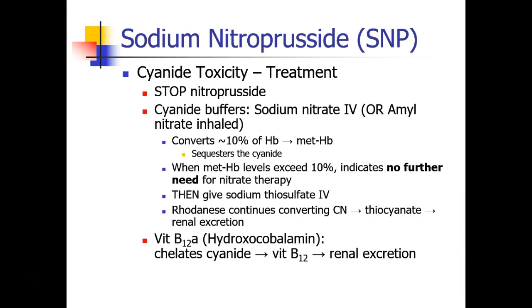The treatment for cyanide toxicity is first to stop nitroprusside. The most important thing is to increase the body's ability to absorb cyanide — this is done by giving a nitrate, which converts hemoglobin into methemoglobin. Even though too much methemoglobin is bad, in this case it serves the important purpose of sequestering the cyanide. You measure the patient's methemoglobin levels during this treatment — levels will remain low because the methemoglobin is busy sequestering cyanide. Once levels start to climb, you know no further nitrate treatment is needed. At that point, patients are treated with sodium thiosulfate to facilitate the rhodanese enzyme in the liver converting cyanide into thiocyanate, then excreted by the kidneys.